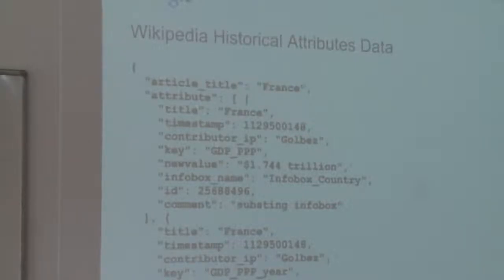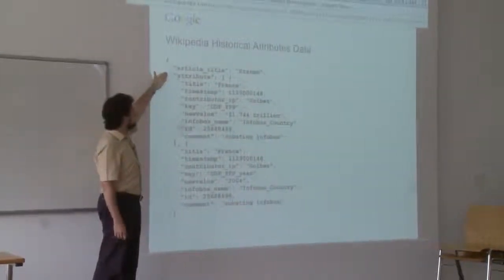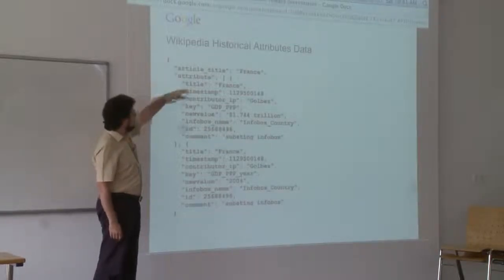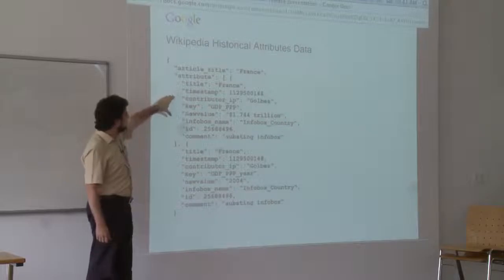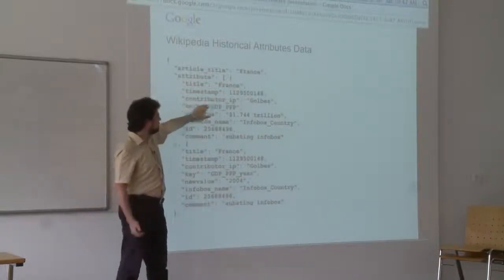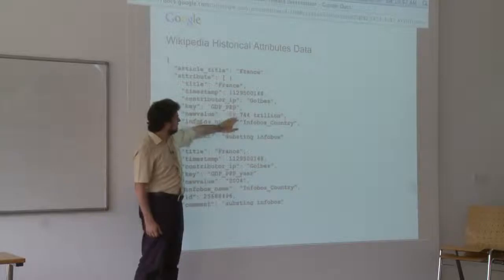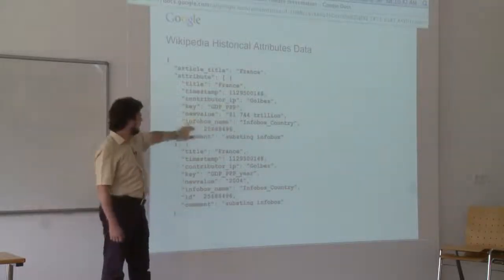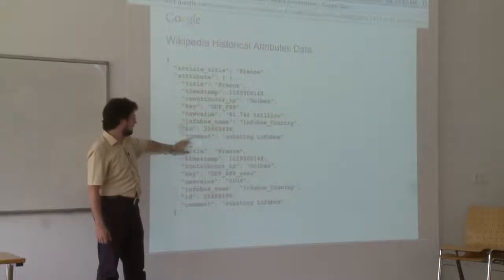More specifically, this is a fragment of the released dataset formatted in JSON. For the entry France, you have a list of attributes seen across all edit history versions of Wikipedia about France. For each one, you have information like: for France, at this timestamp, with some contributor name or IP, this is the Infobox key — the gross domestic product of France — this is the value that this user entered at this timestamp. The Infobox being updated is Infobox country, along with the Wikipedia ID of the change and user comments.